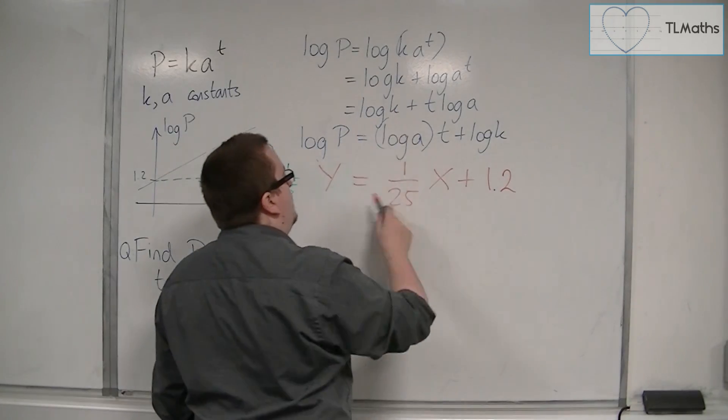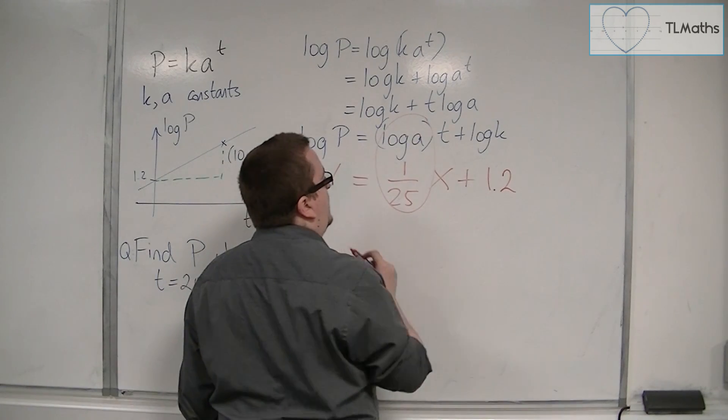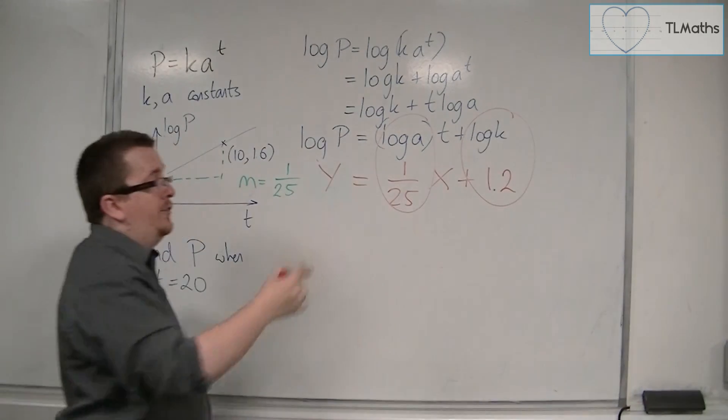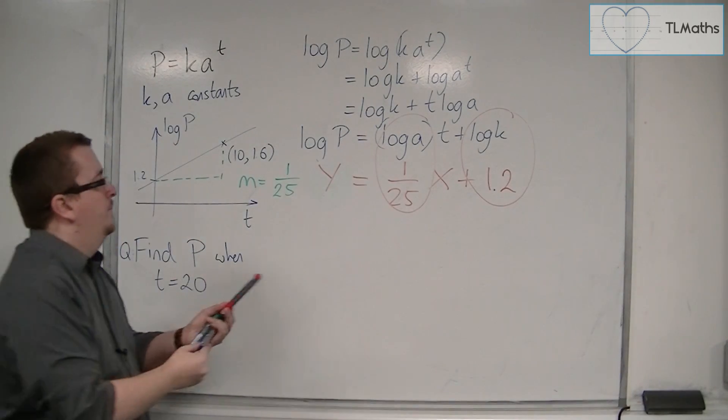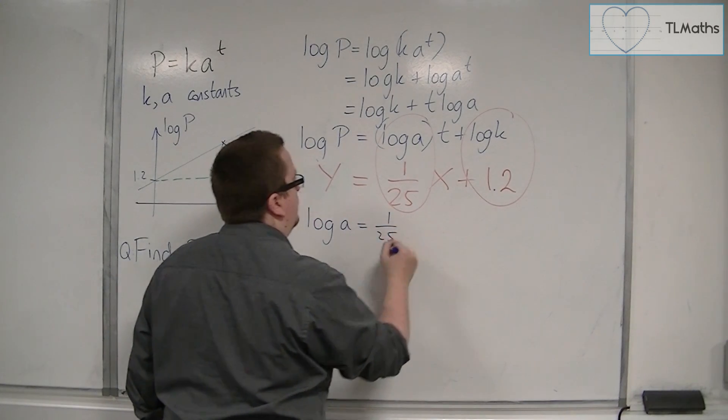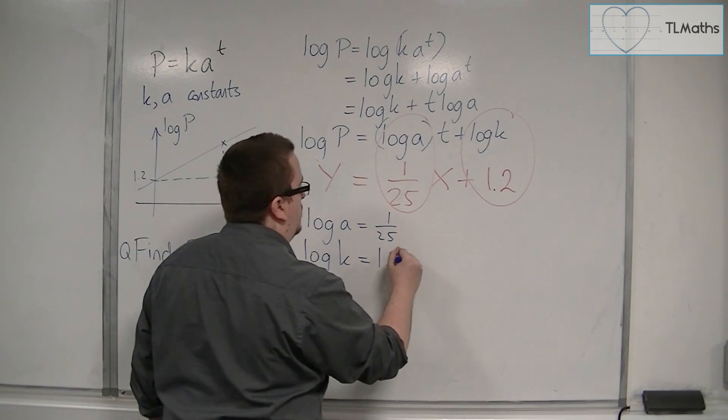So, in comparing this line and this line, the log A must be 1 over 25, and the log K is 1.2. So log of A is 1 over 25, and log of K is 1.2.